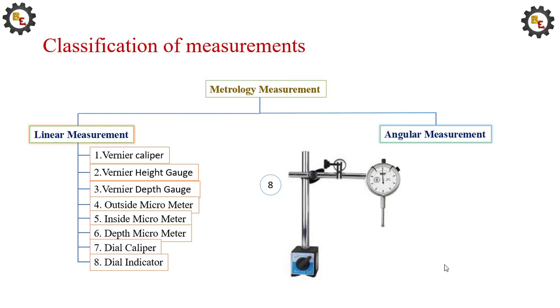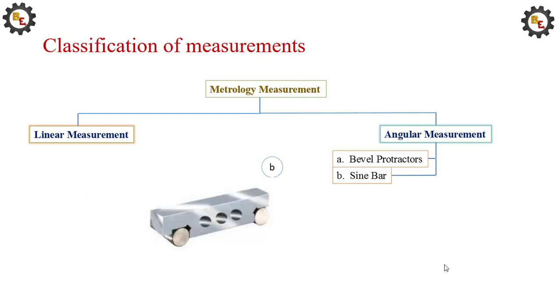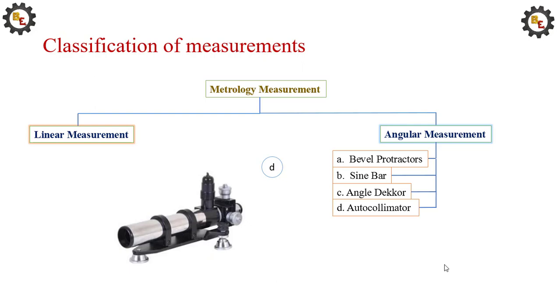Let me see the angular measuring instruments: bevel protractor, used for measuring the angle directly. Sine bar can measure the angle with the help of slip gauges. We cannot measure the angle directly using the sine bar. Angle dekkor and autocollimator - these four instruments are used to measure the angle of any object.